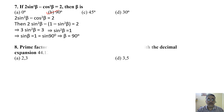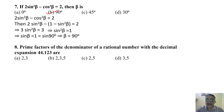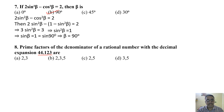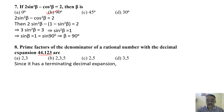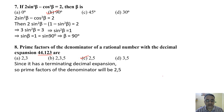Question 8: The prime factors of the denominator of a rational number with terminating decimal expansion. The given decimal is terminating. We know that the denominator of a terminating decimal expansion has only two prime factors: 2 and 5. The correct answer is option C.